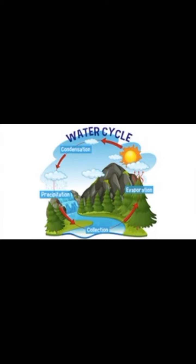The water on earth is constantly moving. The water cycle is the process in which water is recycled over and over again. Water moves from land to the sky and back again. There are four stages of the water cycle.